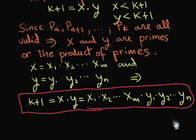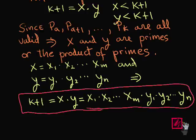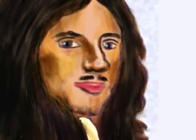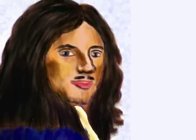Using the principle of strong induction allows us to use the fact that x and y satisfy the properties, since they are less than k plus 1. We would not have been able to do that using only the assumption of p sub k being valid. Pierre Fermat discovered a variant of the principle of mathematical induction.